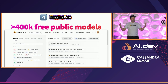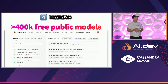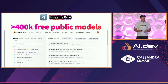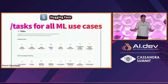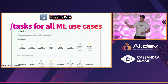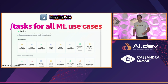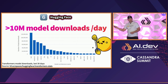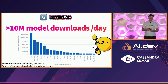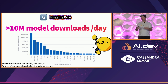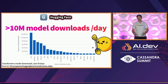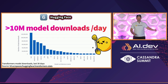Number four: we host over a million repositories — models, datasets, and AI applications. Over 400,000 of those are openly accessible models, covering every modality of machine learning and every discipline — not just NLP. If you go to hf.co/tasks, you can find models to detect objects in images or transcribe speech to text. And all of this is generating over 10 million downloads of transformer models every single day on the platform.